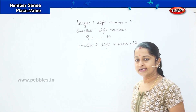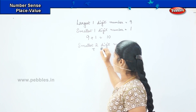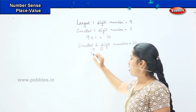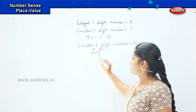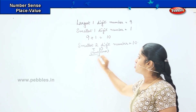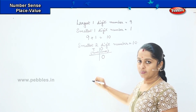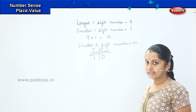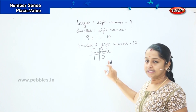How will you write ten, children? We have a tens column and a ones column. T stands for tens and O stands for ones. So how will you write ten? You will write zero in the ones column and one in the tens column. So the smallest two-digit number is ten.